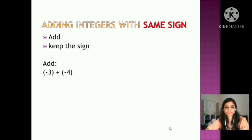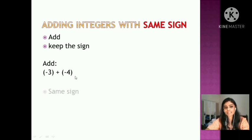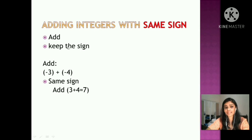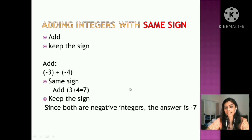Let's solve: minus 3 plus minus 4. Here there are two integers, minus 3 and minus 4. Both are negative integers, so they have the same sign. Following the rule, I add 3 and 4 to get 7. Next, I keep the sign — since both are negative, the sign is negative. So my answer is minus 7. Minus 3 plus minus 4 equals minus 7.